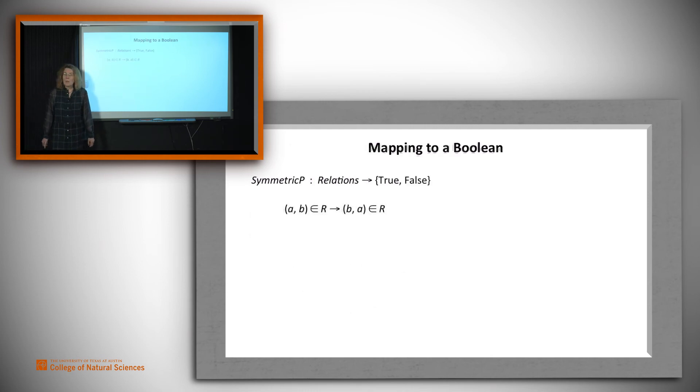Now we can map to things besides numbers and sets of numbers. For example, what if we want to ask a question, a Boolean-valued question about something? The values in the codomain are true and false. So let's look at an example of that. So symmetric P is going to take in a relation and map to true or false, just in case it gets true in case the relation is in fact symmetric and false otherwise. And just to remind ourselves of what it means to have a symmetric relation, a relation is symmetric just in case whenever a, b is an element of r, so is b, a. So we want to check for that property.